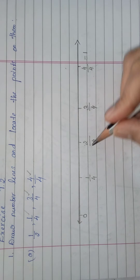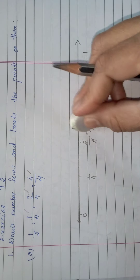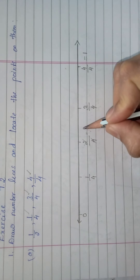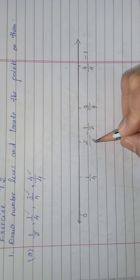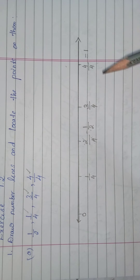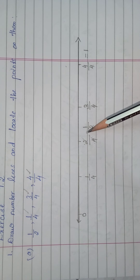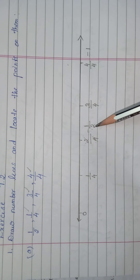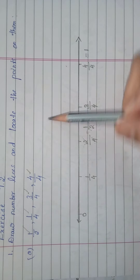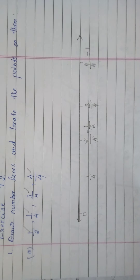How to represent 1 by 2? 1 by 2 is nothing but 2 by 4 — we can simplify 2 by 4 to get 1 by 2. So if 4 by 4 is 1, then 1 by 4, 2 by 4, 3 by 4, and 4 by 4 are the four points. And 2 by 4 is the same as 1 by 2. In this way you can locate fractions on the number line.